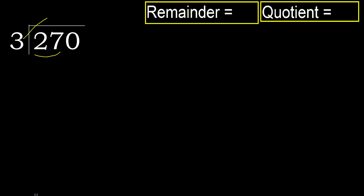3 multiplied by which number is nearest to 27 but not greater? 3 multiplied by 9 is 27, which is not greater. 27 minus 27 equals 0.